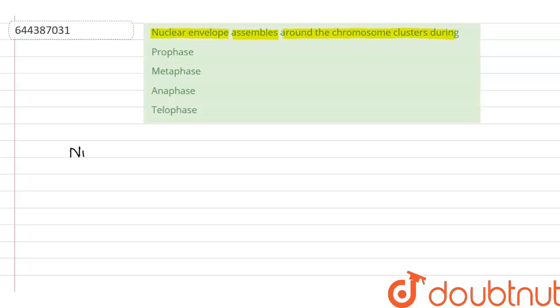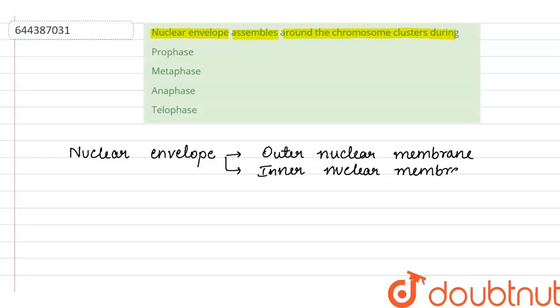So what is nuclear envelope? Nuclear envelope consists of two structures: an outer nuclear membrane and an inner nuclear membrane. Together they form the nuclear envelope.